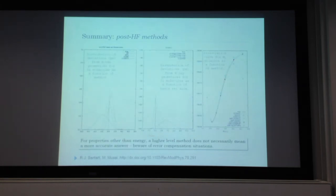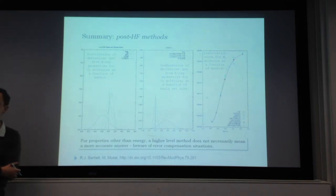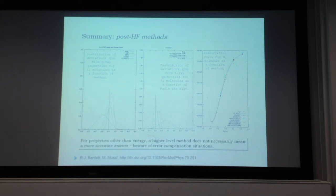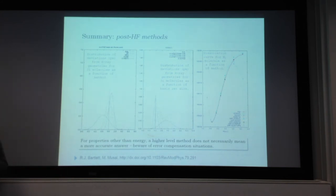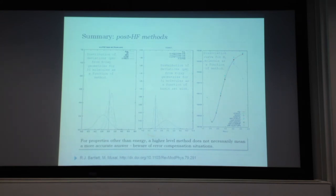A word of caution: the extreme accuracy discussed applies only to energies. All other parameters have their own error compensation situations. For geometries in particular, the Born-Oppenheimer approximation ignores the fact that nuclei are quantum mechanical particles with their own probability distributions and zero-point vibrations even at zero Kelvin. Treating nuclei as classical point charges is accurate for many purposes, but at some level of precision the effect is felt.